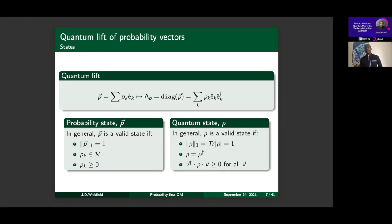ρ = ρ† enforces that the probability entries are real. And just as probability values must be greater than or equal to zero, we require that every diagonal element of this density matrix, in whatever basis we form, is always greater than or equal to zero — this is positive semi-definiteness. So the three properties correspond one-to-one: eigenvalues are real (like real probability entries), positive semi-definite (like non-negative probabilities), and normalized trace equal to one — giving a sensible notion of probability.